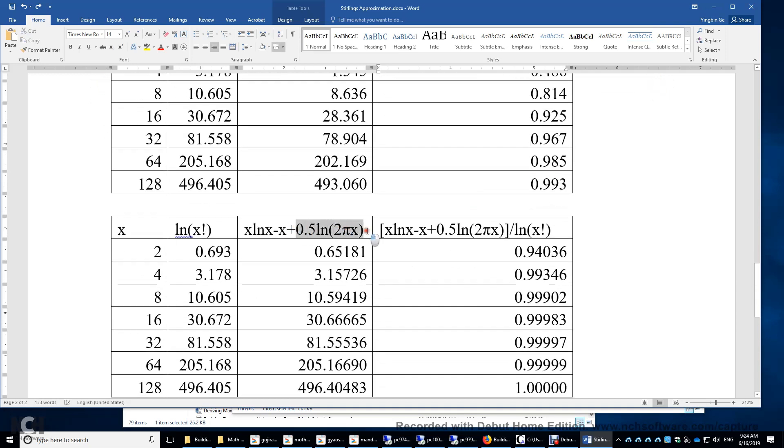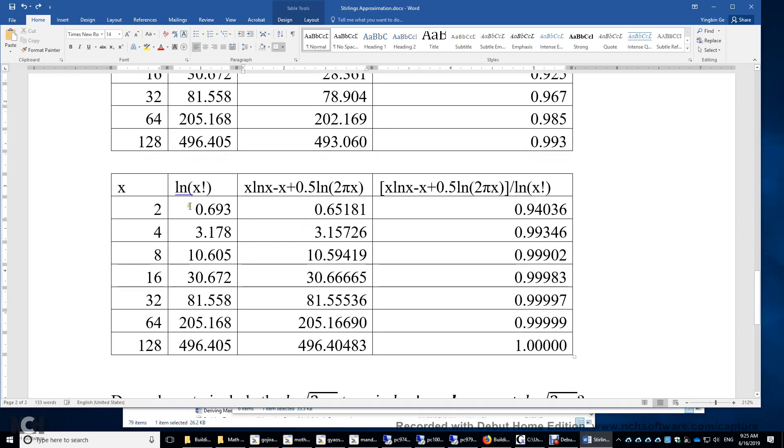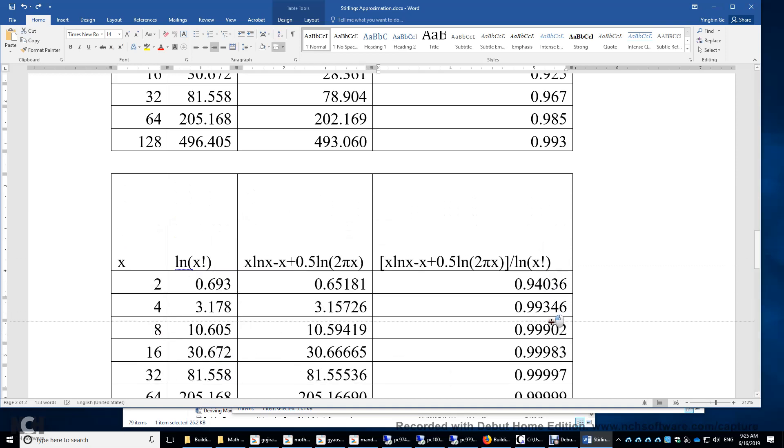So what if we include another term? This is actually the natural logarithm of the square root of 2 pi x. I just take this 2 pi x to the power of 1 half. We just take the 1 half in front of the natural logarithm. Again, we have the exact values here. We have the approximation here. And this time, we have the third term. Again, x is from 2 to the power of 1 to 2 to the power of 7. So let's look at the ratio.